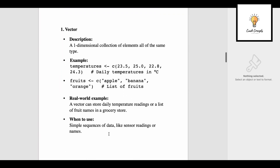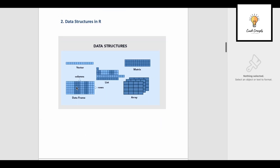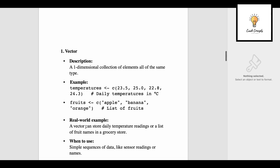Our first data structure is vector. What is a vector? A one-dimensional collection of elements, all of the same type. This is how we create it: the name of the vector is 'temperatures', arrow c, and in brackets we give the values — daily temperatures in Celsius. Or we create vector 'fruits' arrow c, with values apple, banana, orange. Visually, a vector looks like a one-dimensional collection of same-type values, hence the same color is used.